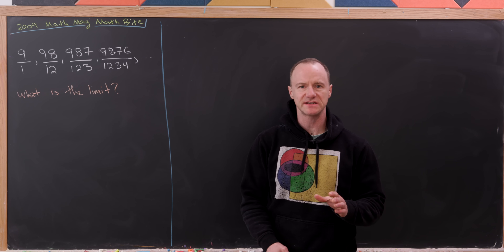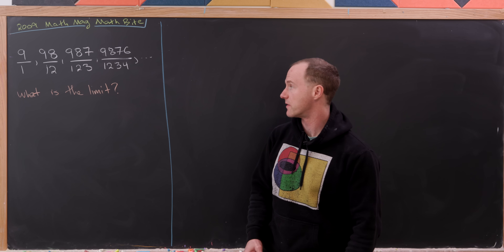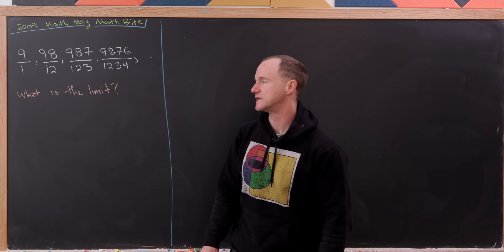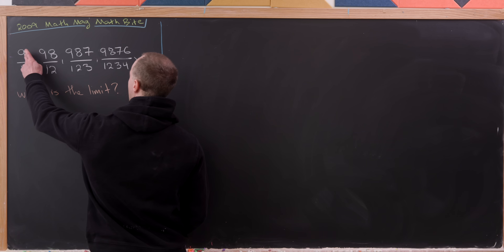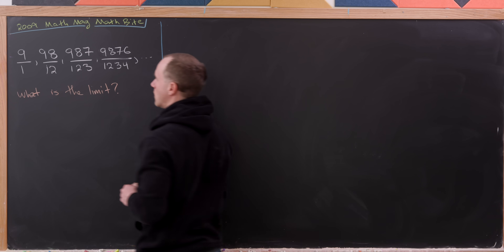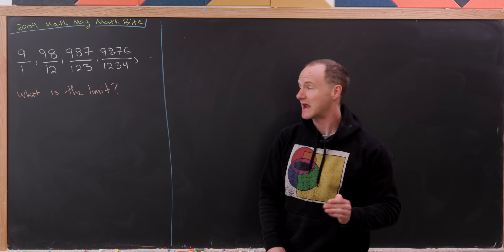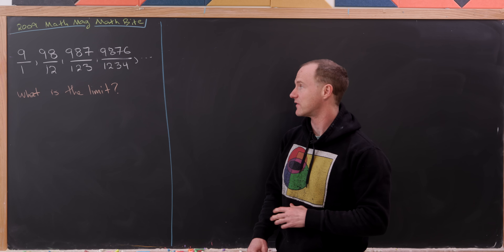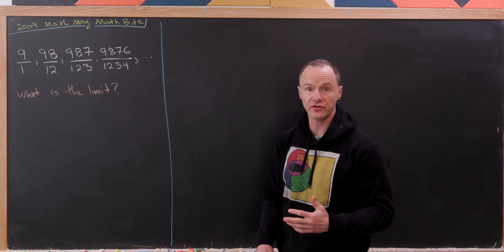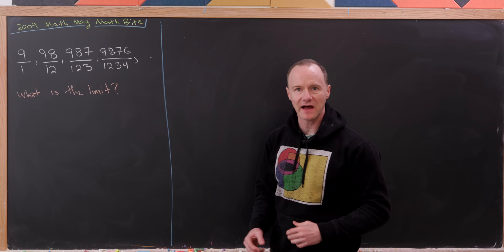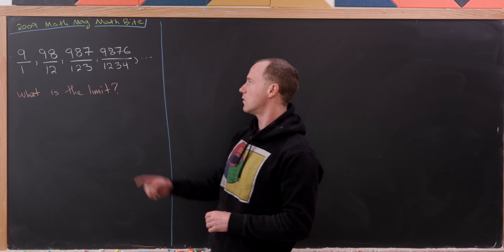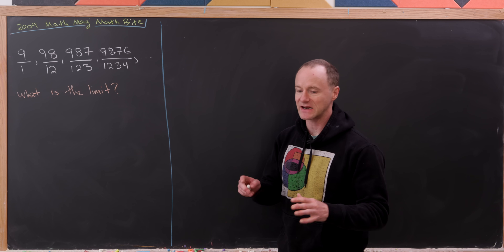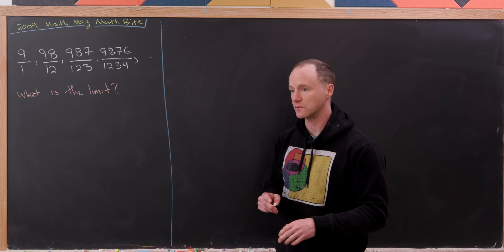Let's find the limit of this interesting sequence that I found in a math magazine. Here's how we're going to build the sequence. We'll start with 9 over 1, then 98 over 12, 987 over 123, 9876 over 1234, and so on and so forth.